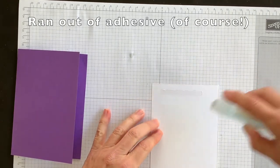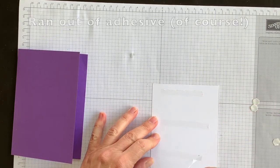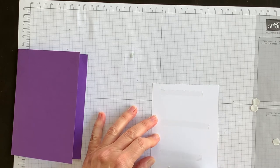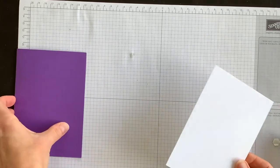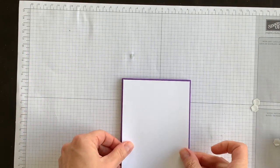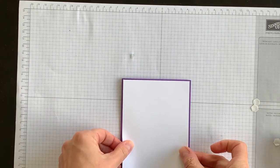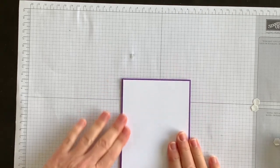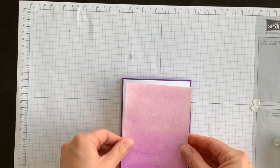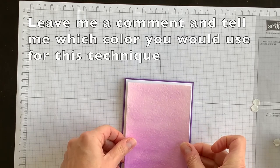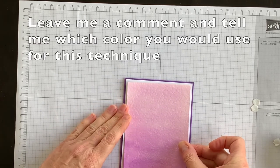I'm going to use my adhesive and add this layer of Whisper White to my card base first, and then I'm going to bring in my watercolor wash layer and I'm going to add that to the front of my card like so.